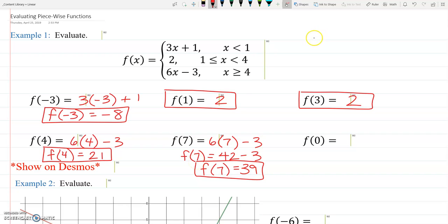Alright. Last one. F of 0. 0 is, I'm looking at my boundaries again, 0 is less than 1. So I'm using the top one. So this is going to say 3 times 0 plus 1. So F of 0, 3 times 0 is 0. 0 plus 1 is 1. There we go.